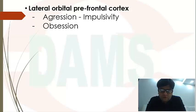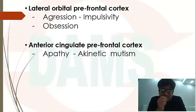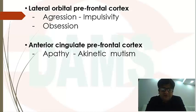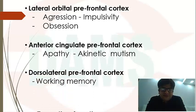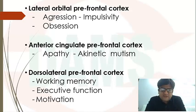Orbitofrontal cortex — aggression, obsession, and impulsivity. Phineas Gage probably had damage to the orbitofrontal cortex. Anterior cingulate cortex — apathy and akinetic mutism. If they ask about stupor, the answer is anterior cingulate cortex, because akinetic mutism is synonymous with stupor. DLPFC — working memory, executive function, motivation, and attention. Working memory is highly dependent on attention.